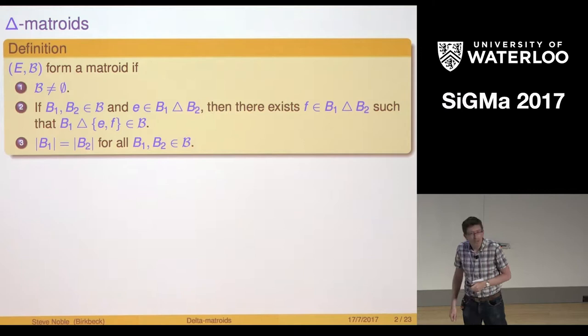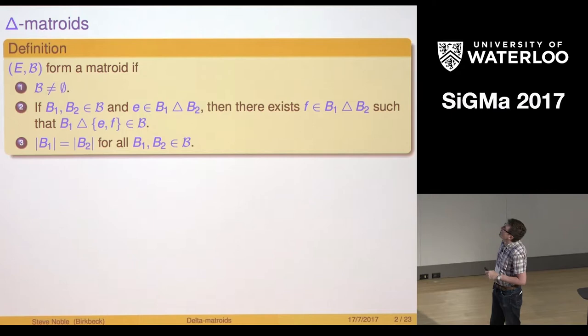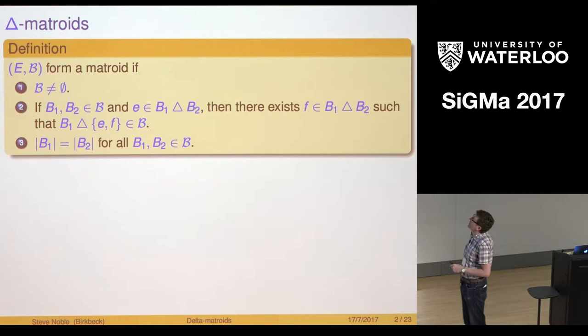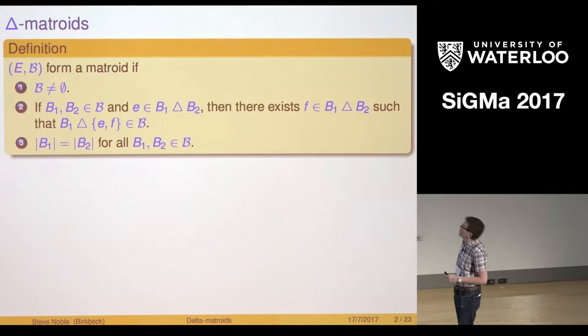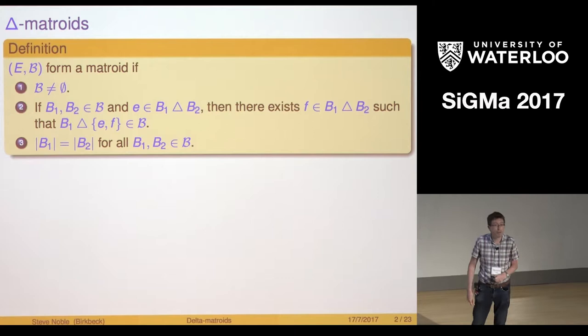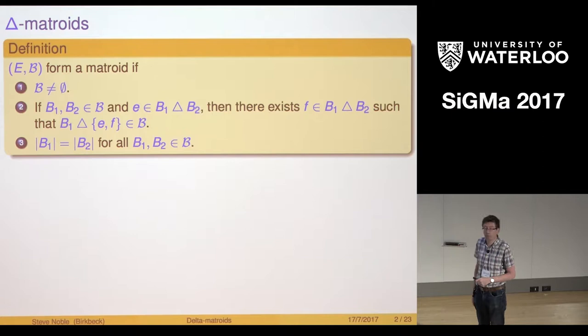Let's start off by remembering what a Delta Matroid is if we recast the definition of a Matroid just a little bit in terms of its bases. In particular if we take the second axiom there, that is more or less the basis exchange axiom for a Matroid except what I've said is that I can take an element that's in the symmetric difference of two bases and find another element in the symmetric difference and flip them with respect to the first basis and get another basis.